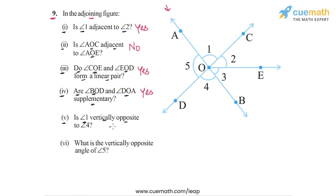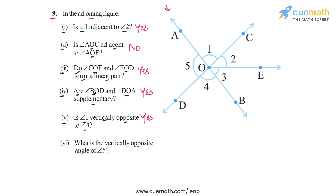In question five: is angle one vertically opposite to angle four? Angle one is this angle and angle four is this angle. These two angles form a pair of vertically opposite angles because lines AB and CD intersect at O, and angles one and four are formed on opposite sides of that intersection. So the answer for part five is yes, angle one is vertically opposite to angle four.